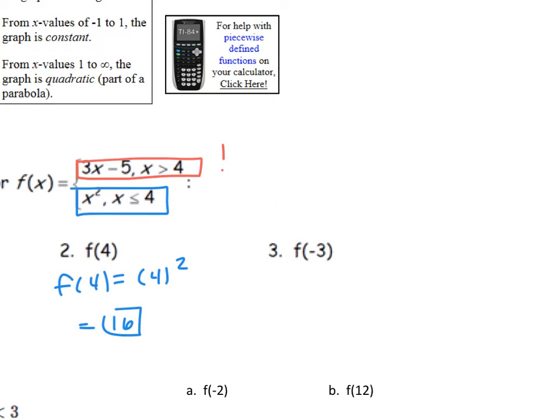Now I'm going to plug in negative 3. So I have to ask myself, is negative 3 larger than 4 or is it smaller than 4? It's smaller than 4. So I'm going to plug in negative 3 into this equation for this piece. Negative 3 squared is simply negative 3 times negative 3, which is a 9. And that's your final answer.